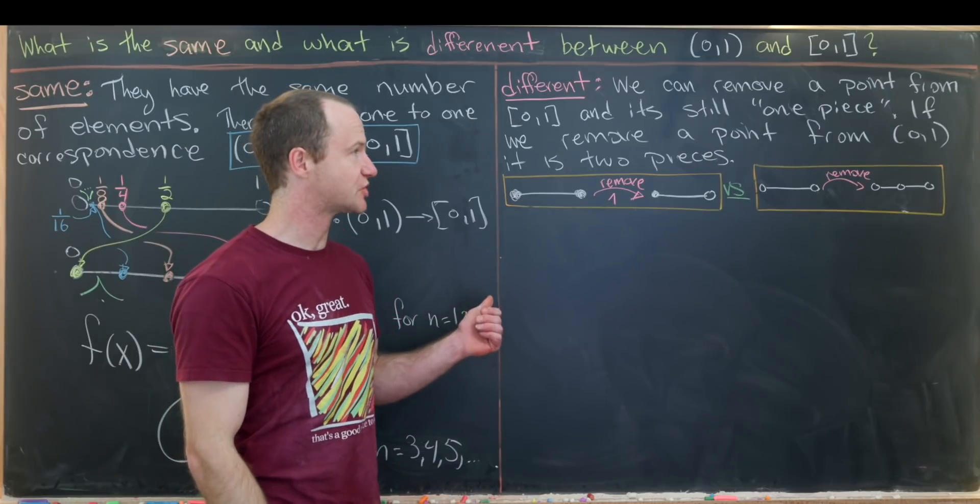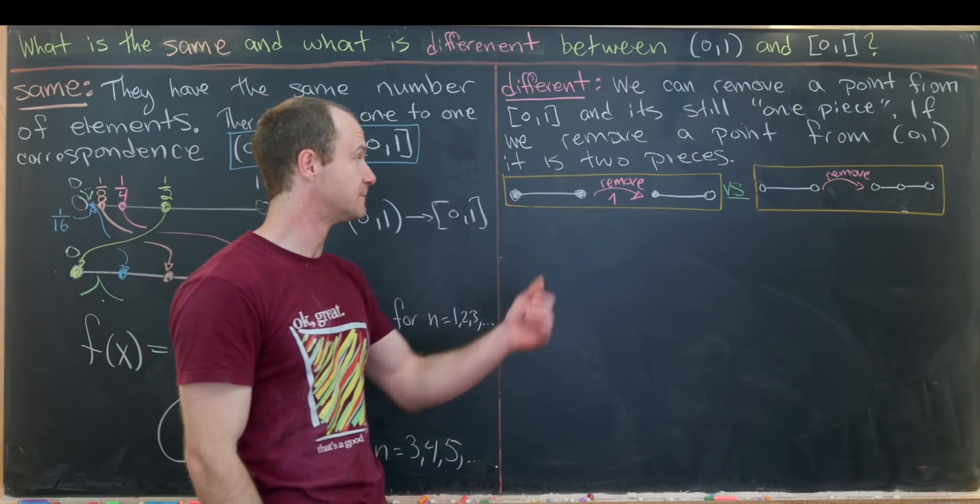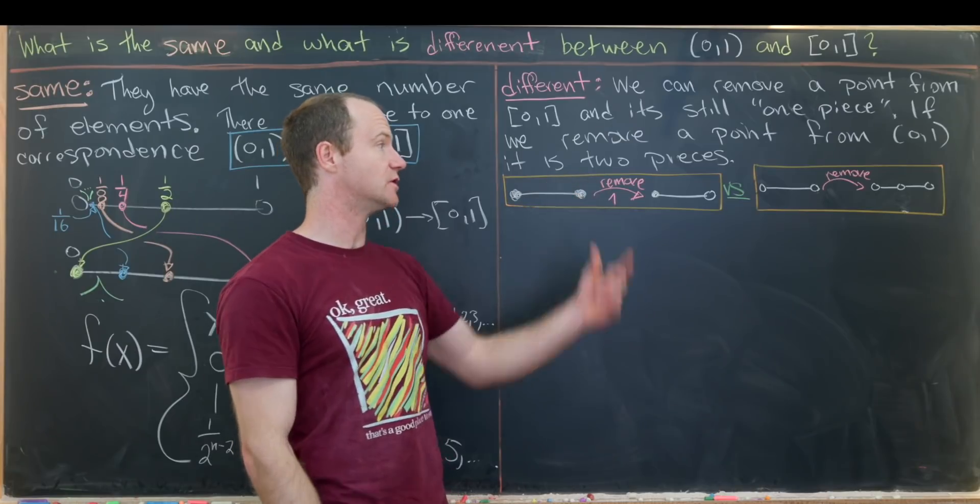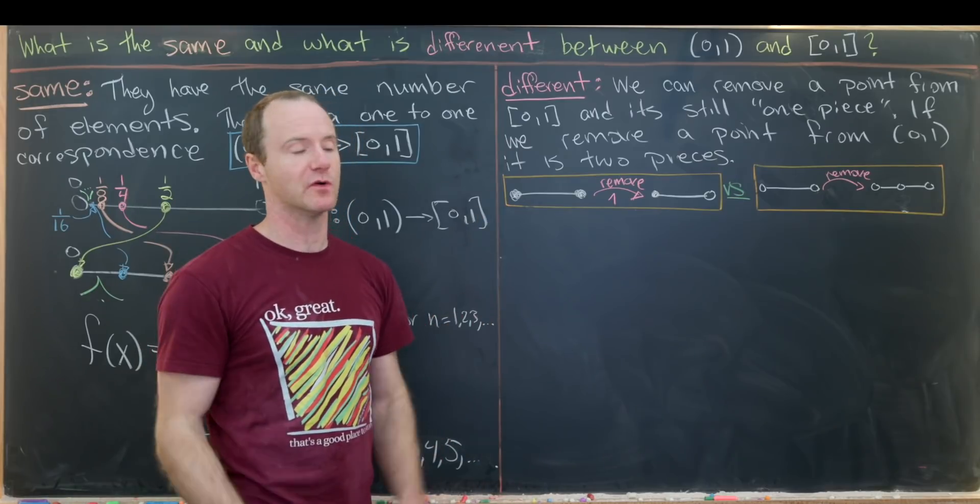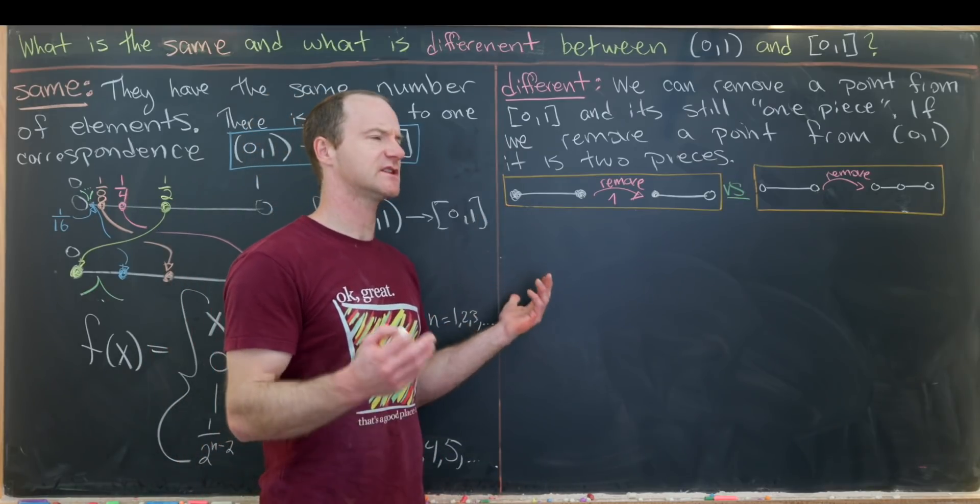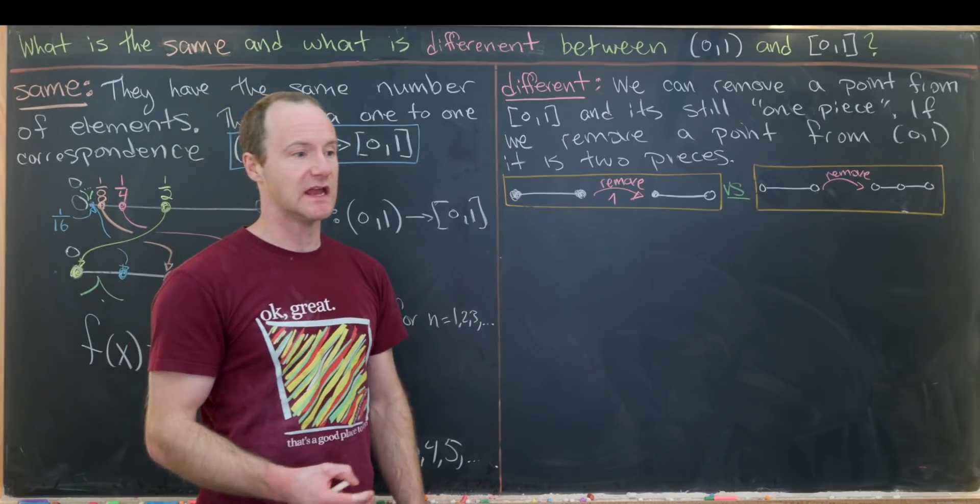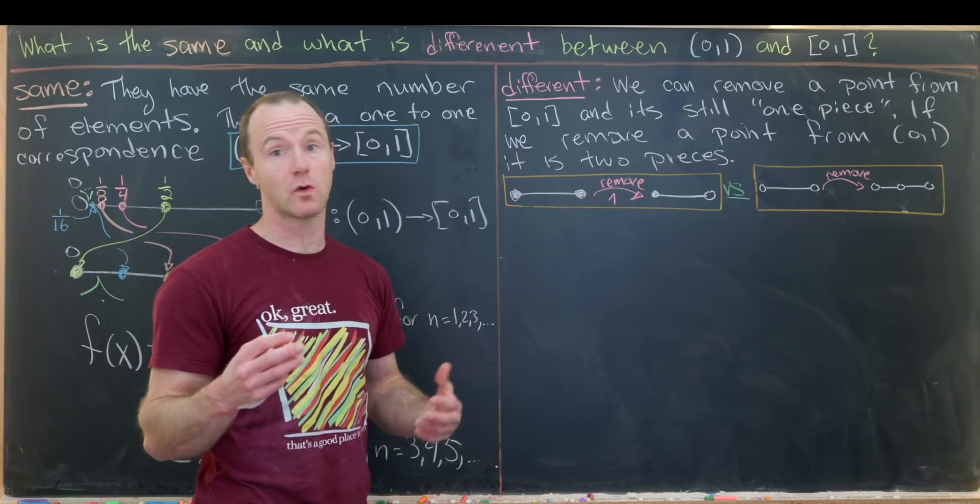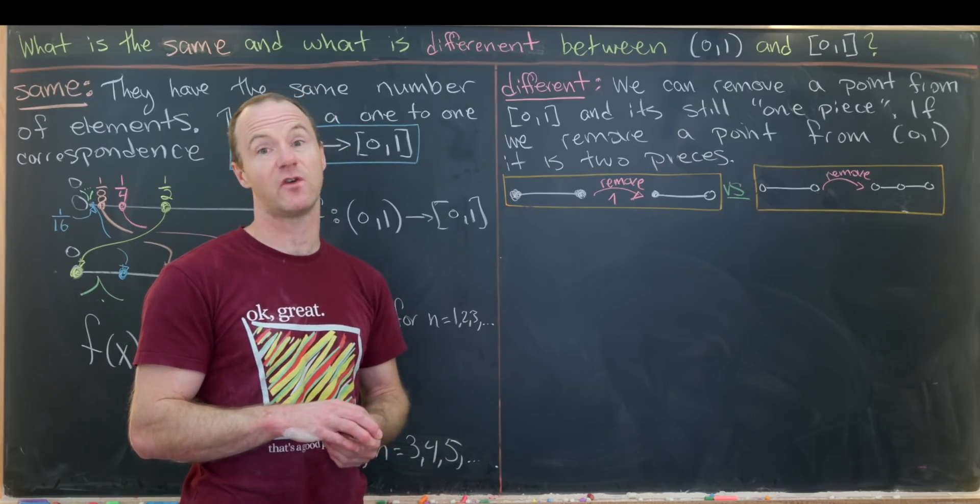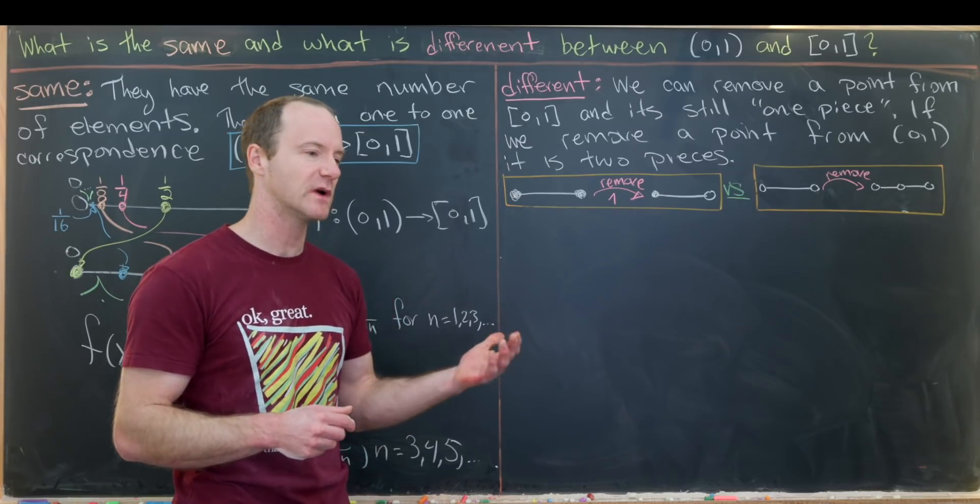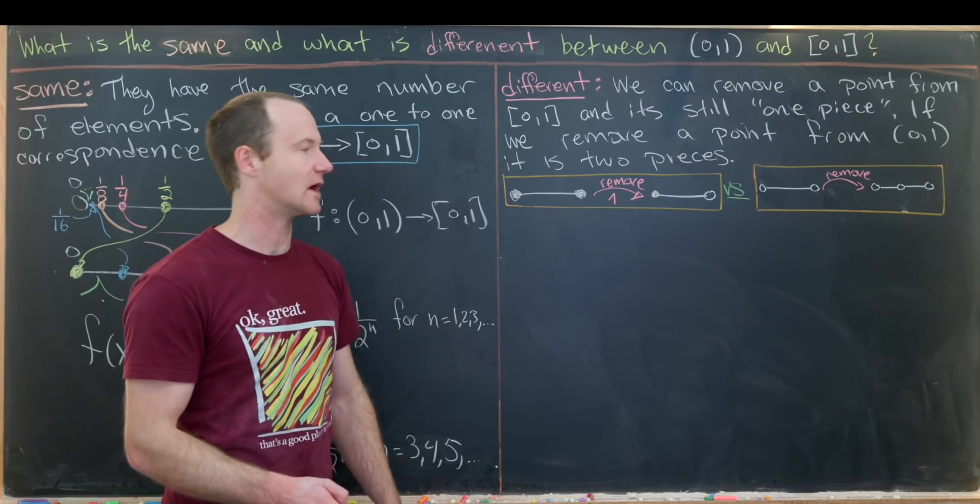So what we'll actually end up showing is that it's impossible to make a continuous bijective function between this closed interval and this open interval. So in other words, they are not homeomorphic. So this uses a couple of ideas from maybe the first bit of a topology course. And in fact, if you're interested in a topology course, I'm going to record a full set of videos for a topology course probably next fall. And that's going to be on my second channel. So if you want to get ahead of that and make sure you're ready, you could go ahead and subscribe to that second channel.